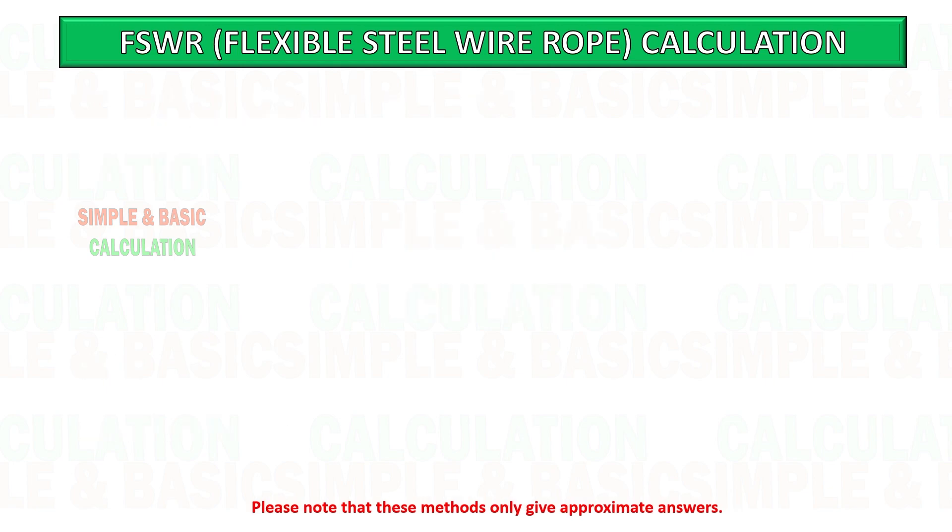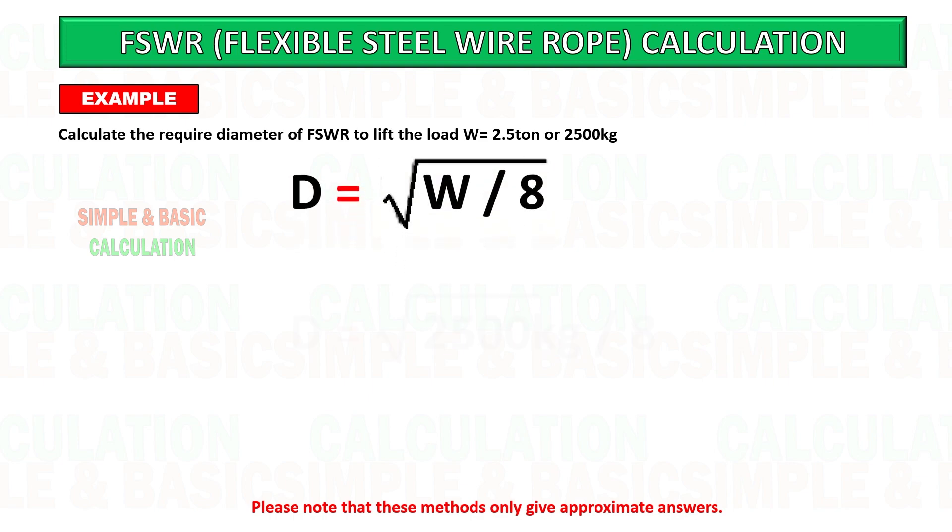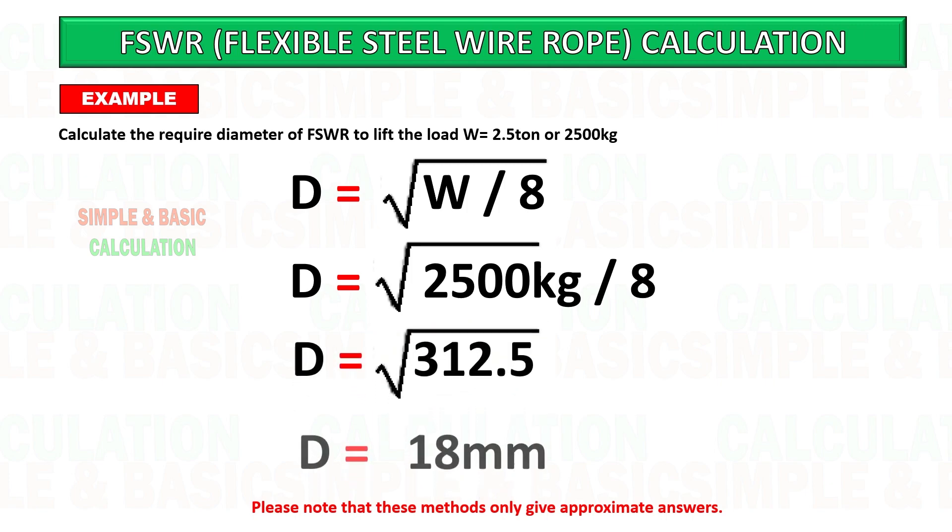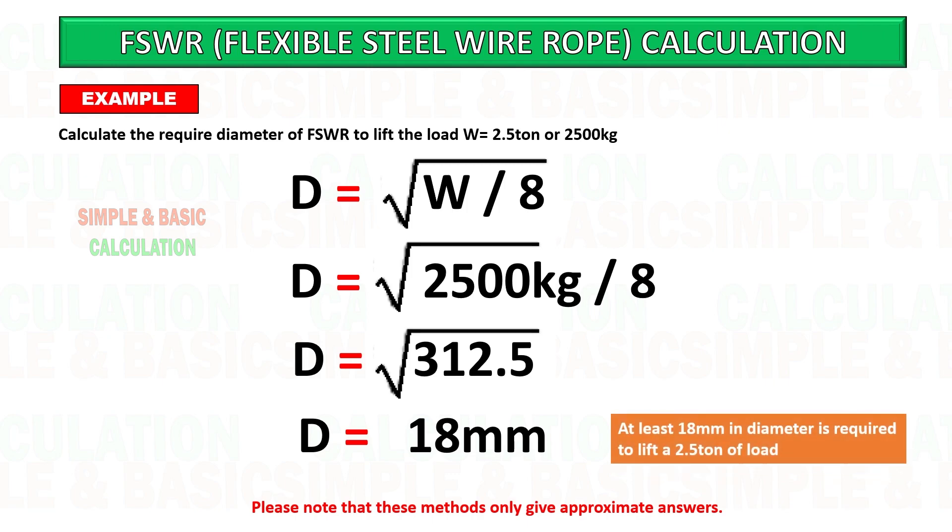In this example, calculate the required diameter of wire rope to lift the load 2.5 ton or 2500 kilogram. Based on the given formula, you can start to calculate the required rope diameter.